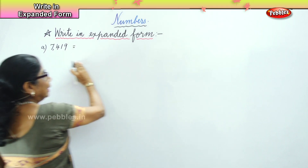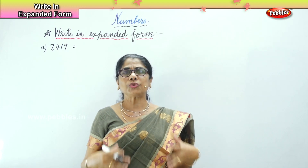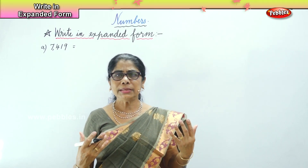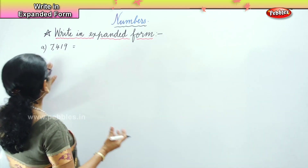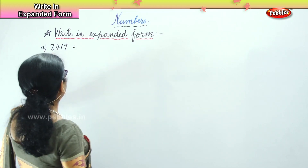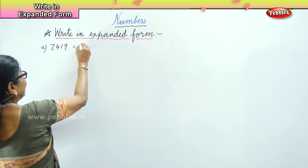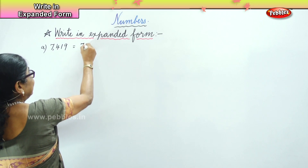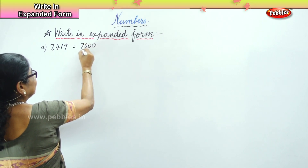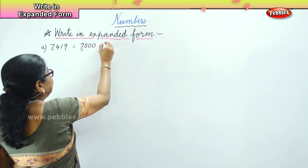Now you have to write 7,419 in expanded form. For that you must know how many thousands, how many hundreds, how many tens, how many ones. The first one we will do together. So you have 7,000. What will you write? 7,000.